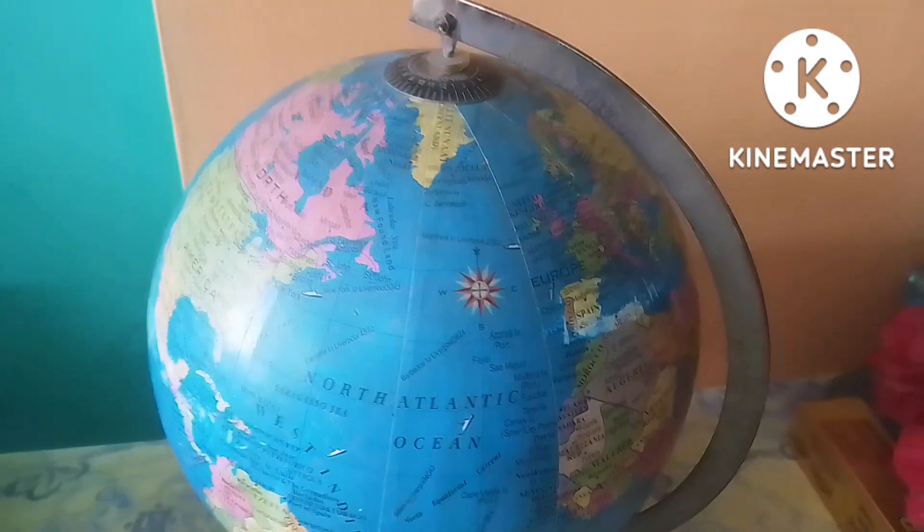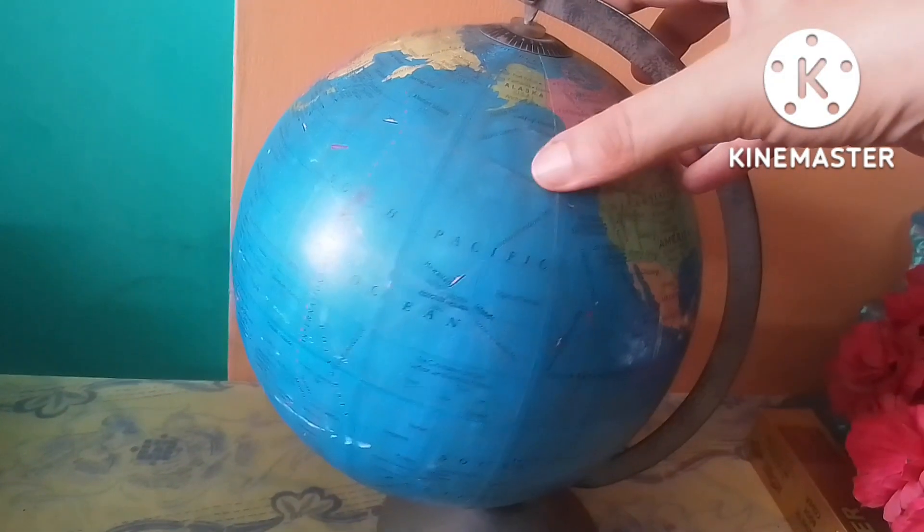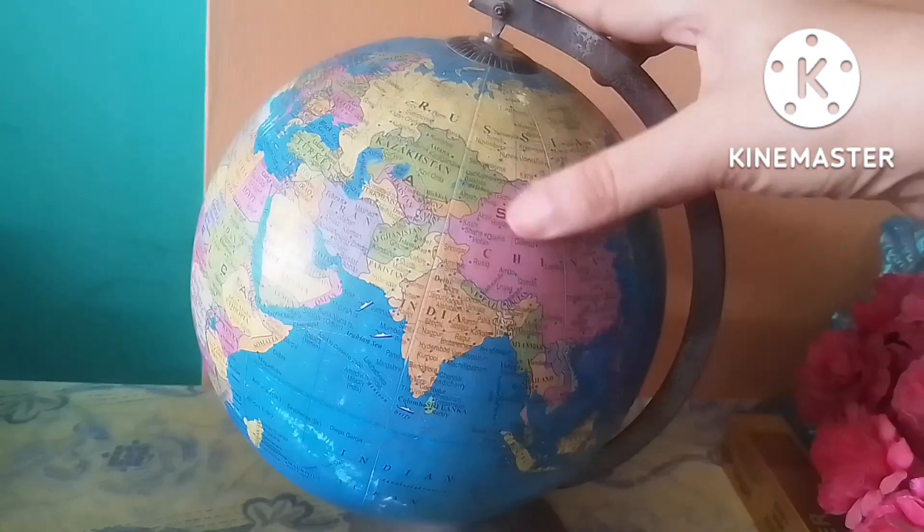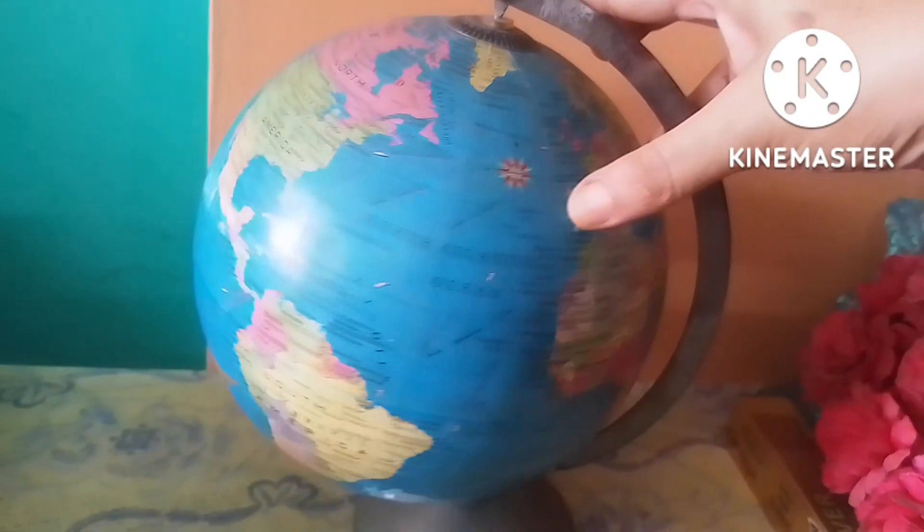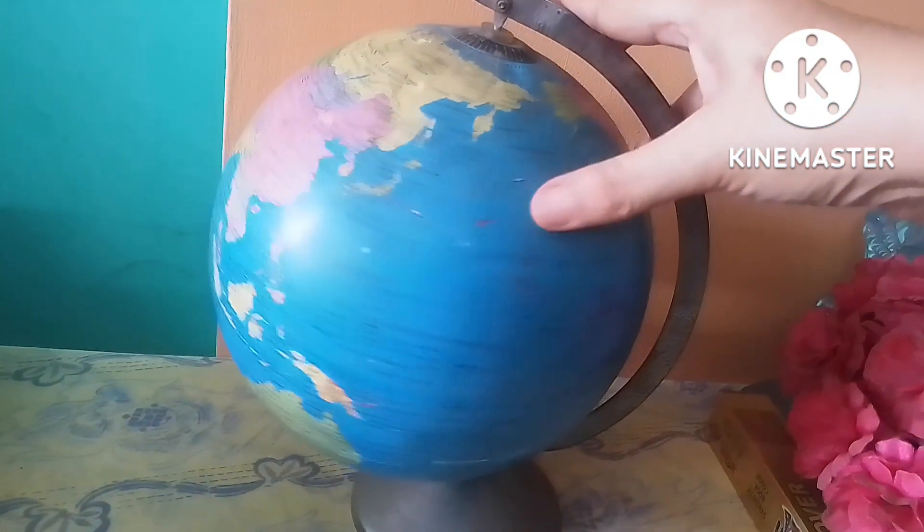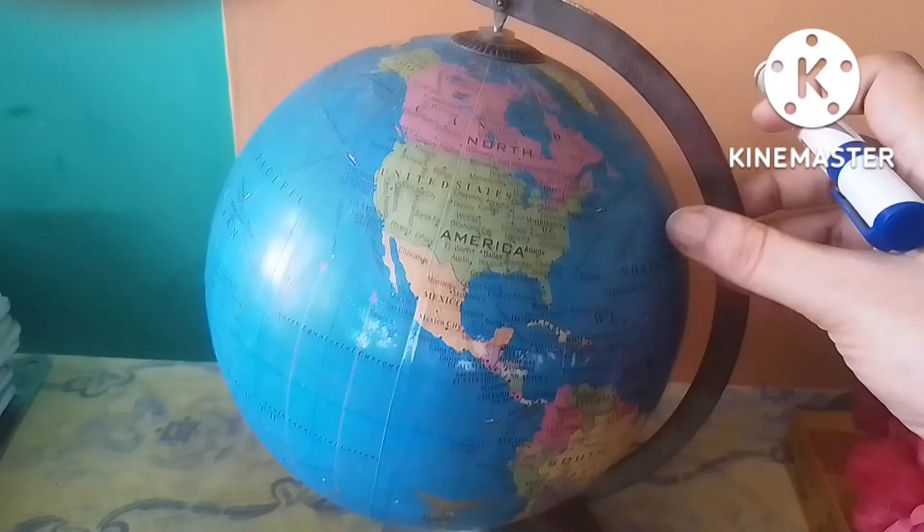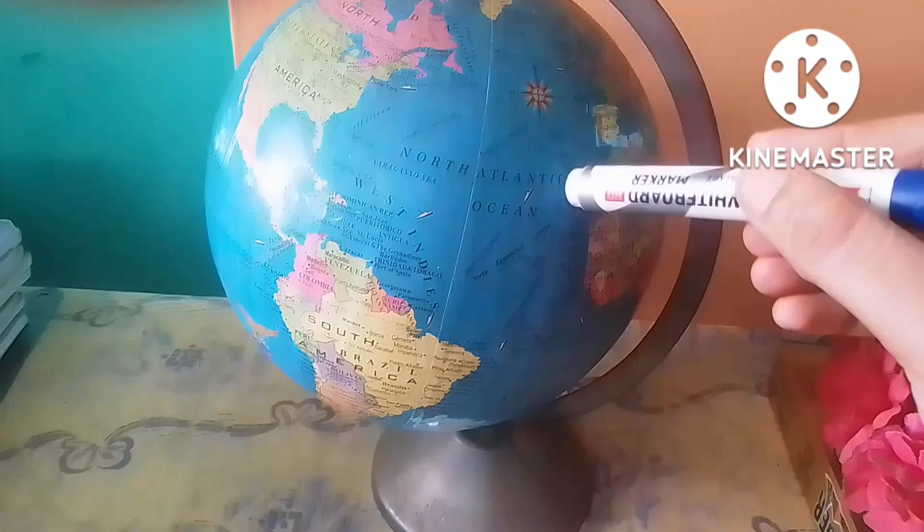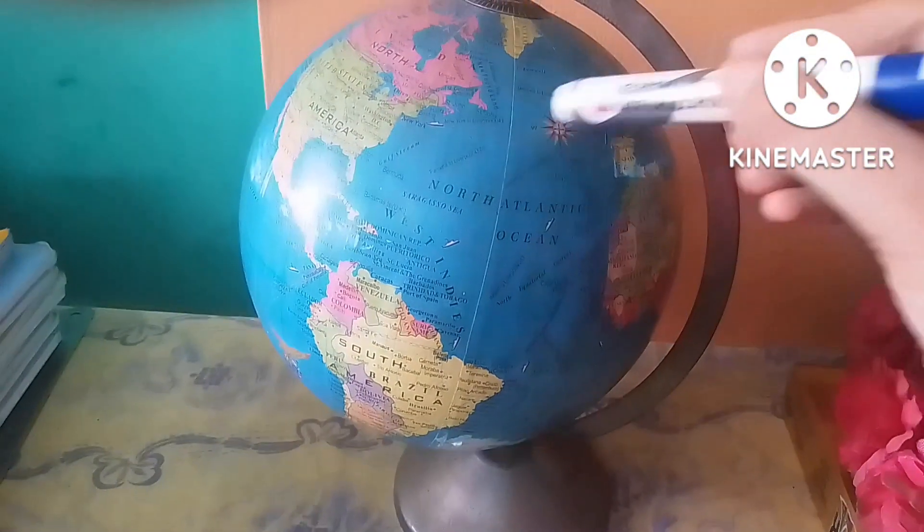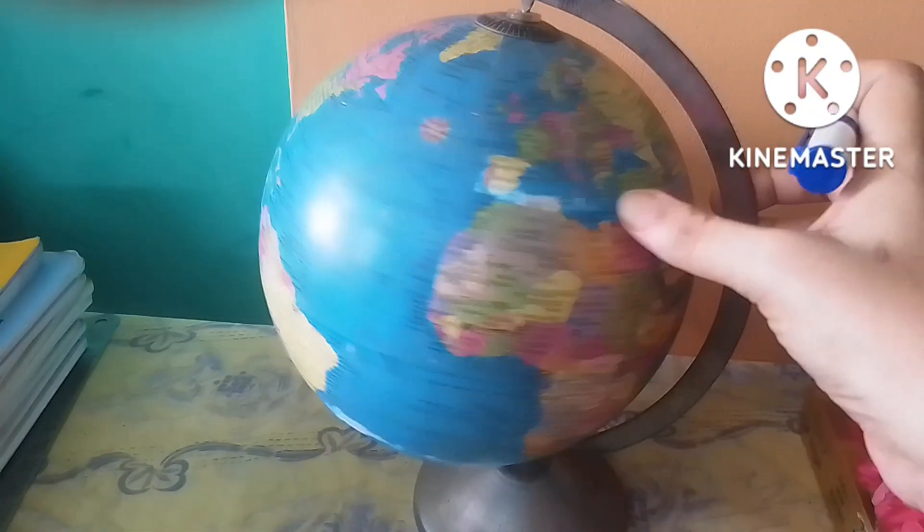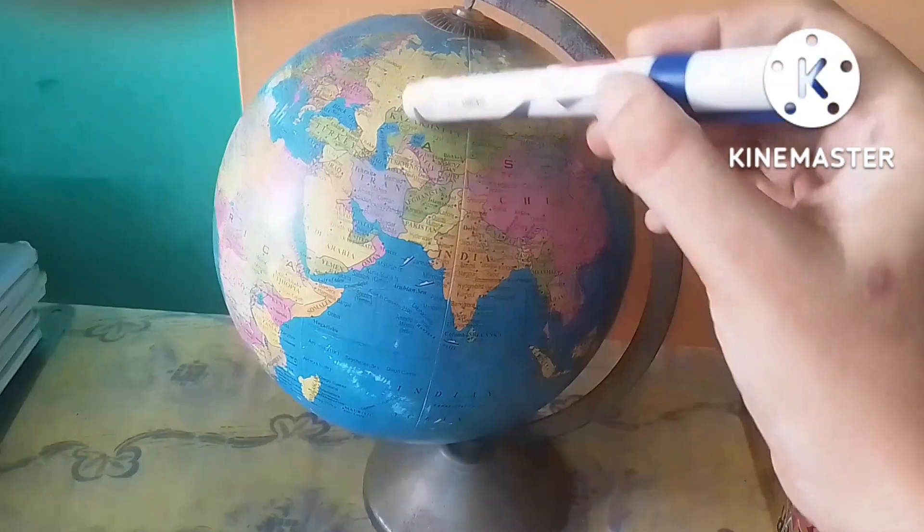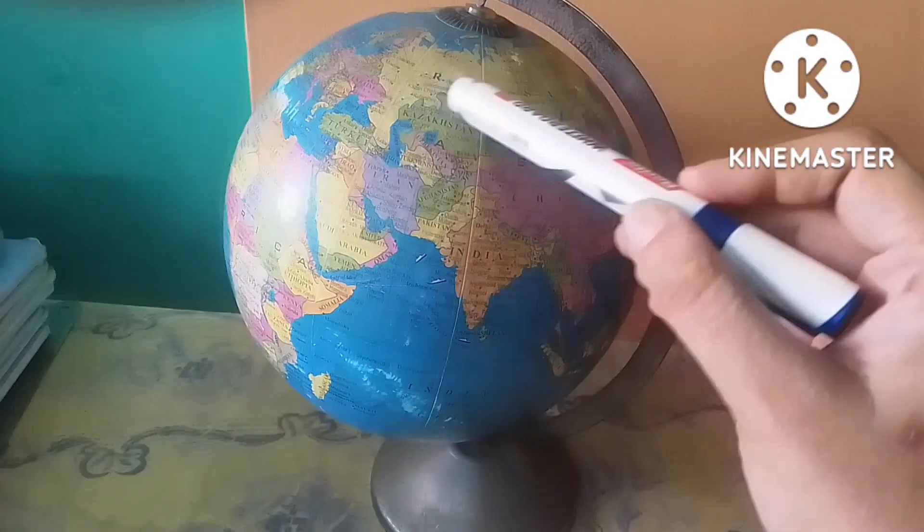This is a model of globe. I think it is present in the house of every student, isn't it? A globe is a spherical model of earth. It serves purposes just like a map. You can see all the latitudes and longitudes clearly here. A globe is the only accurate way to study the whole earth. It shows the distribution of land and water on the surface of the earth, the correct shape, size and location of the continents and oceans. It helps to locate sea routes, air routes, rivers, cities, etc.